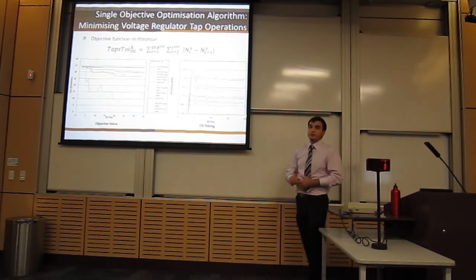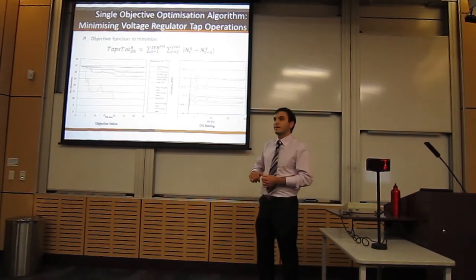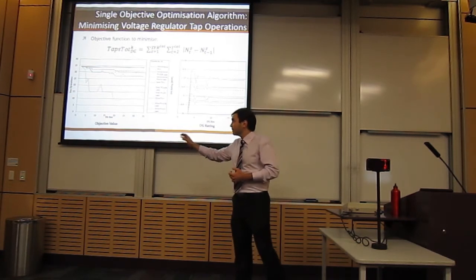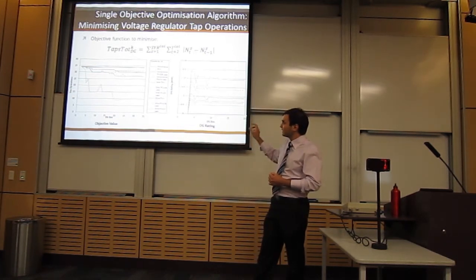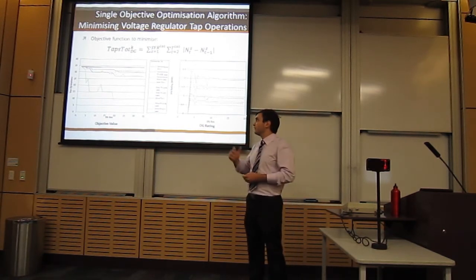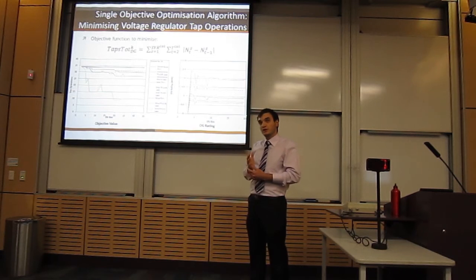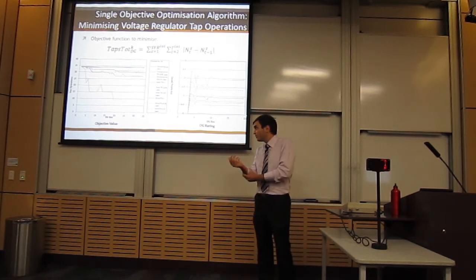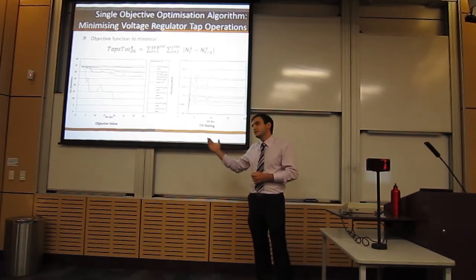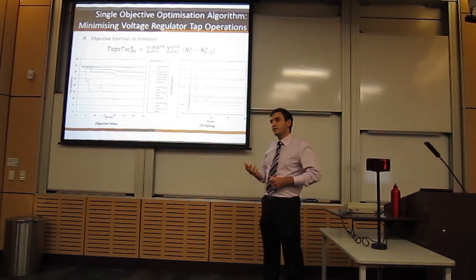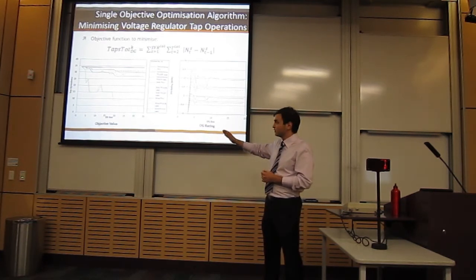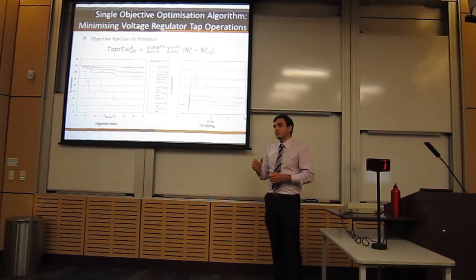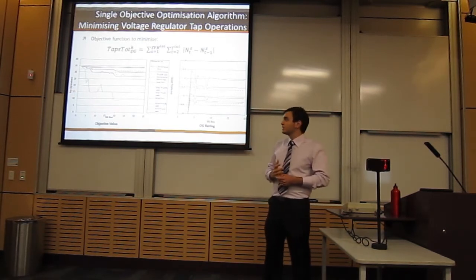The first optimization algorithm implemented was that to minimize voltage regulator tap operations. For the graphs presented, the x-axis shows the bus at which the DG was implemented, with bus 1 being the grid connection and bus 34 being the most remote bus. The y-axis on the left graph shows the objective value, and the y-axis on the right graph shows the corresponding DG rating. It can be seen that by implementing DG towards the end of the feeder, the most significant reduction in tap operations can be achieved.